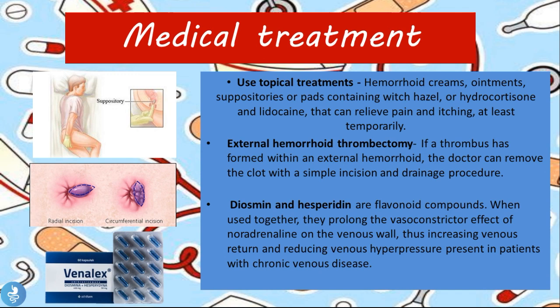For medical treatment, topical treatments include hemorrhoid creams, ointments, suppositories, or pads containing witch hazel, hydrocortisone, and lidocaine to relieve pain and itching temporarily. If a thrombus has formed within the external hemorrhoid, the doctor can perform an external hemorrhoid thrombectomy — removing the clot with a simple incision and drainage procedure. Diosmin and hesperidium — flavonoid compounds — can also be used. Together they prolong the vasoconstrictive effect of noradrenaline on the venous wall, increasing venous return and reducing venous hyperpressure. Examples include Venalex and Detralex, which are helpful for hemorrhoids, varicose veins, and venous insufficiency.